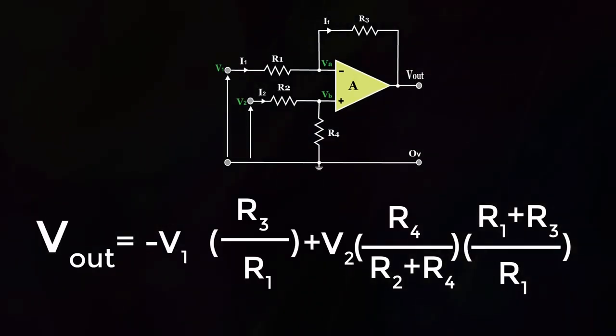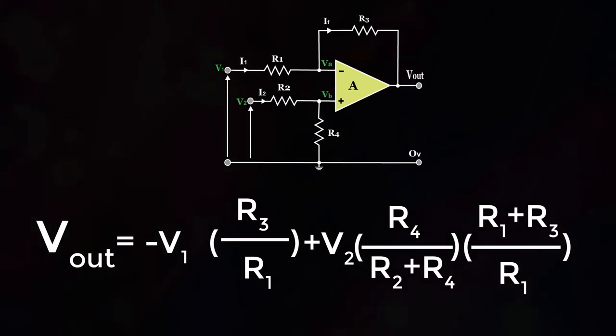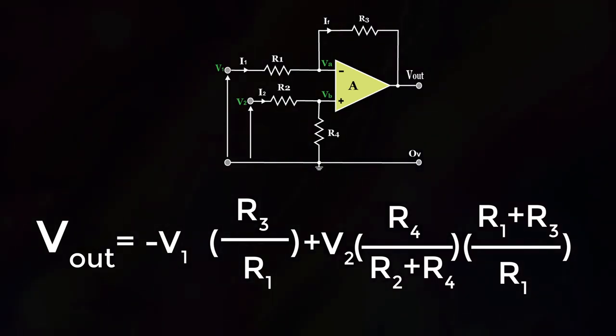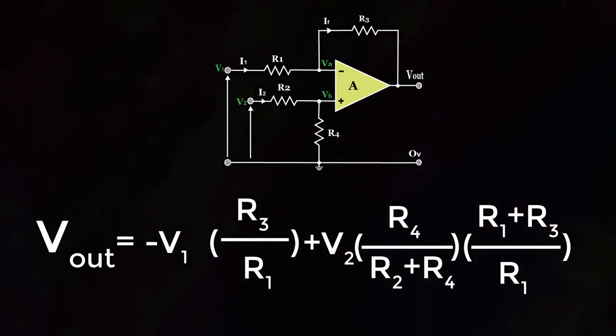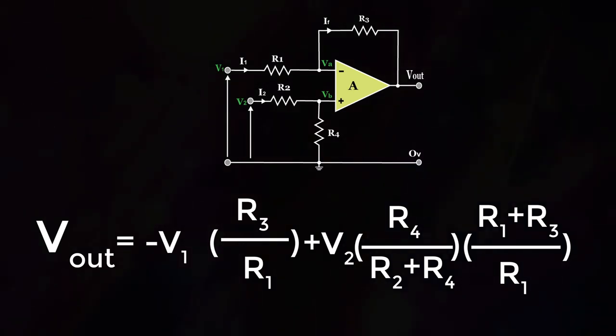Therefore, Vout equals minus V1 R3 by R1 into R3 by R1 plus V1 into R3 by R1 plus V2 into R4 by R2 plus R4 into R1 plus R3 by R1.